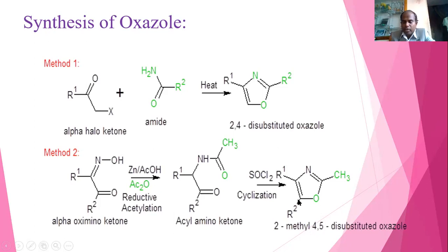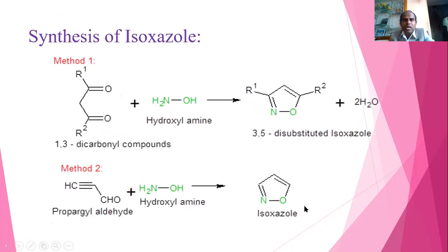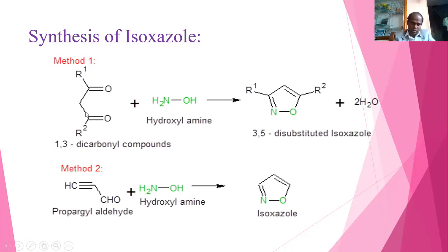Isoxazole is a 5-membered ring with oxygen and nitrogen at adjacent positions. It can be prepared from a 1,3-dicarbonyl compound reacting with hydroxylamine hydrochloride, forming a bond to yield 3,5-disubstituted isoxazole. Isoxazole can also be synthesized from propargyl aldehyde reacting with hydroxylamine hydrochloride to give isoxazole.